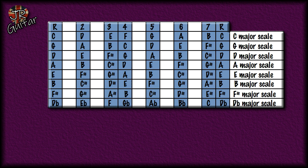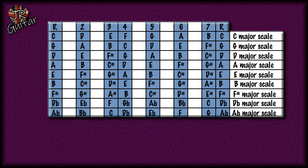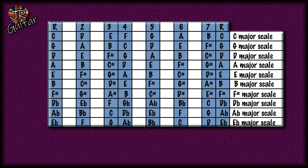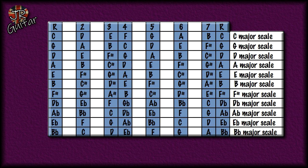We can avoid it in this case by referring to the C sharp major scale as a D flat major scale. Taking the fifth note of that, which is A flat, we build an A flat major scale. Once again the fifth note is E flat, so let's build the E flat major scale. Then the fifth note of the E flat major scale is B flat, so let's have the B flat major scale.